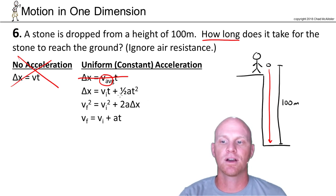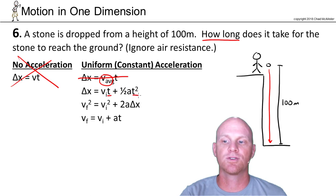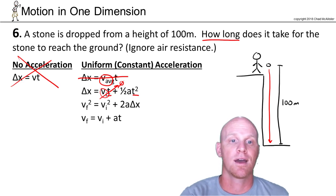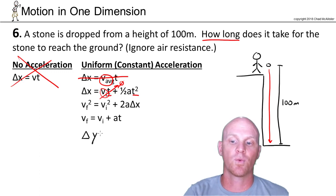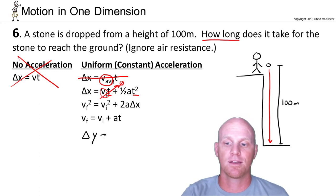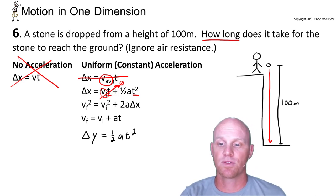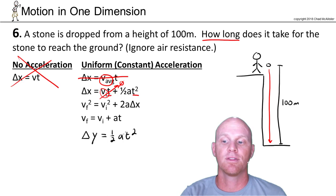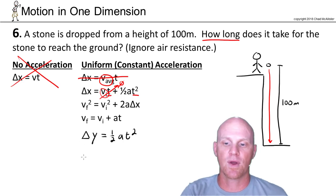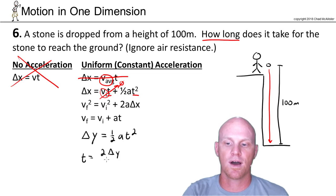With the second equation, we want to solve for time. Since the initial velocity is zero, the v_initial term goes to zero and disappears, leaving an equation we can actually solve. So δy = ½at². We know the displacement, we know the acceleration due to gravity, and the only unknown is time. Rearranging: t = √(2δy / a).